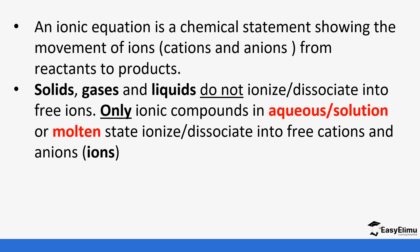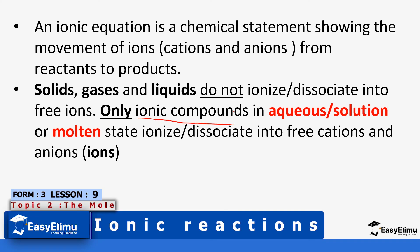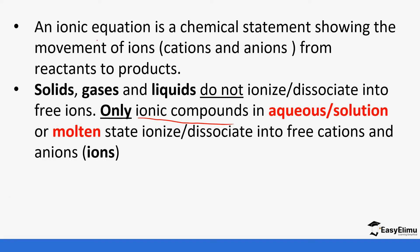When writing an ionic equation you'll be focusing mostly on the ions. When you look at an ionic compound it's made up of cations and anions, so you're going to break these down separately and see how they react. Solids, gases, and liquids do not ionize, so every time we have those in an equation they're not going to break down into ions. We only ionize ionic compounds that are in aqueous solution or in molten state. Those in solid state do not ionize because the ions are in a fixed position.